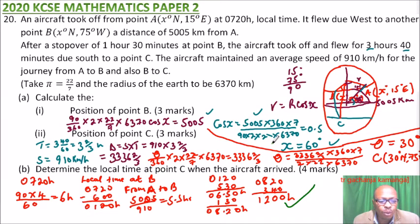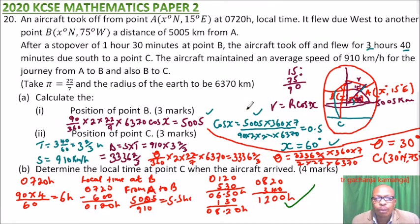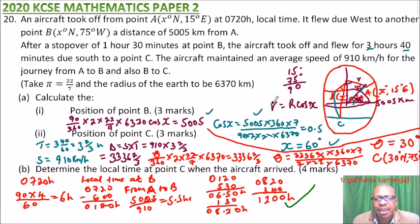That is how you work out this question — you get four marks for part B. This topic is covered in Form 4 and is called navigation, or longitude and latitude. The most important things are knowing how to get the distance between two places on the surface of the Earth and how to calculate time differences.